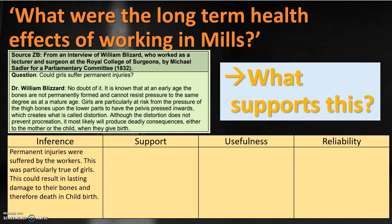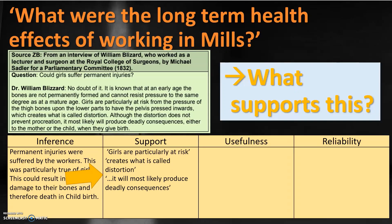The next aspect is what exactly in the source supports this information. We can draw out specific quotes or passages which support what we've inferred. The first might be that 'girls are particularly at risk' — a direct quote from the source that supports our inference. The source also says that it creates what is called 'distortion,' referring to the problems being suffered. Finally, we can take from the source that it will 'most likely produce deadly consequences' — again a direct quote from which we have drawn our inference.